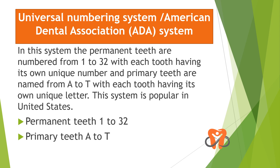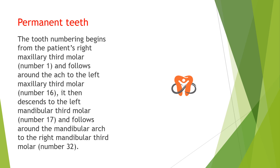Coming to the next system — we are trying to overcome the problems faced with the previous system. This is the Universal Numbering System, or American Dental Association system. In this system, the permanent teeth are numbered from 1 to 32, with each tooth having its own unique number. Primary teeth are named from A to T, with each tooth having its own unique letter.